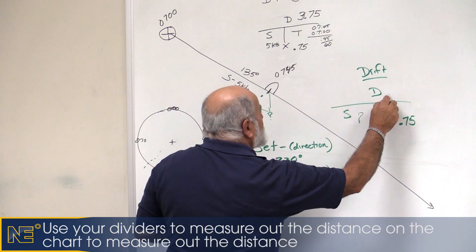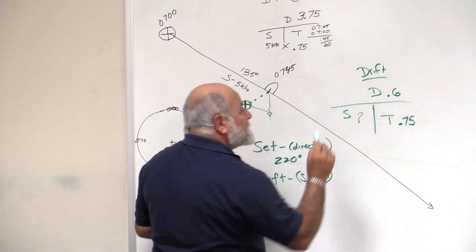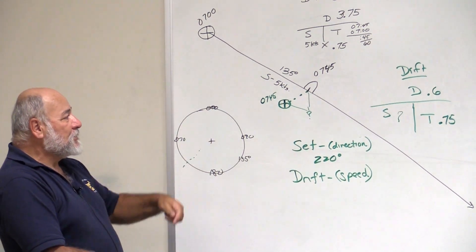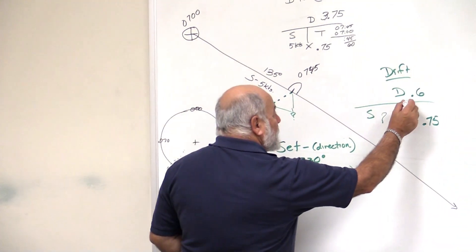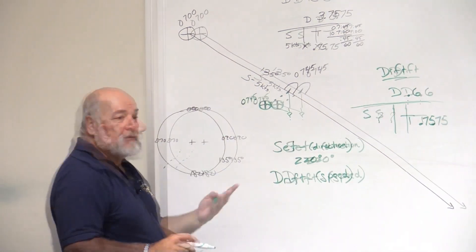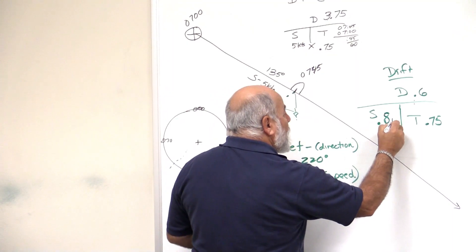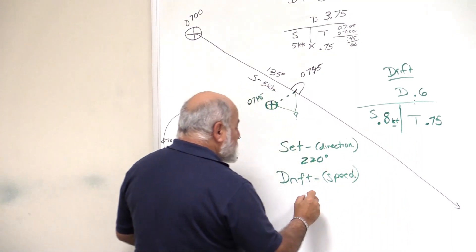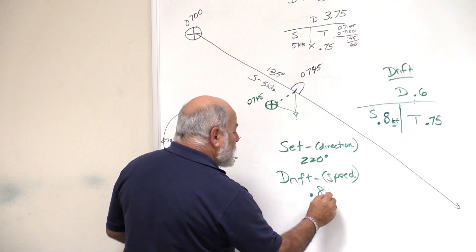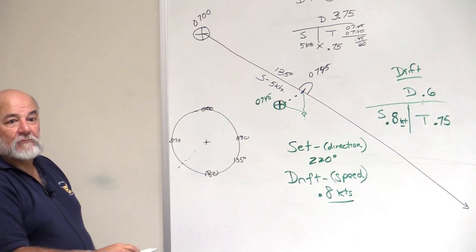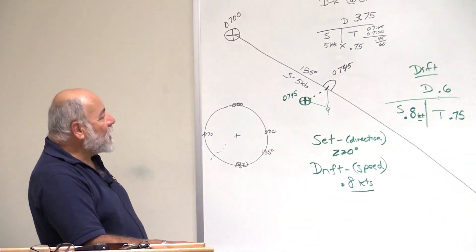Dividers, side of the chart, get the distance. For the sake of discussion, we're going to say that distance we get set off course is 0.6 miles, six tenths of a mile. We do the math: distance divided by time equals speed. So our speed is 0.8 knots. That's the drift, that's how fast the current is going. That's all set and drift is.